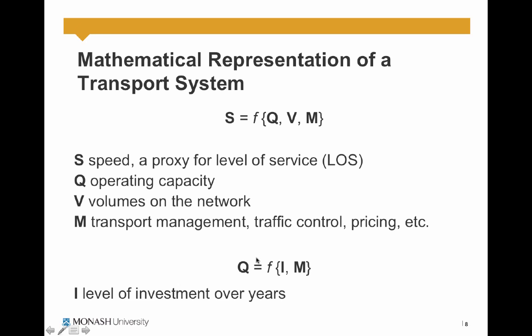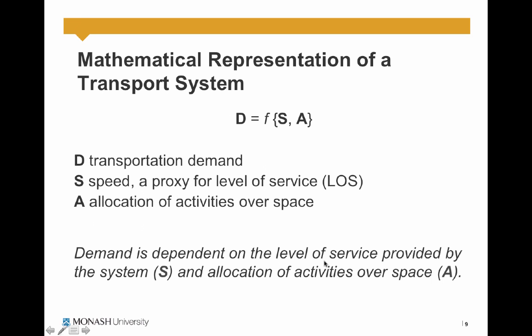Operating capacity itself, Q, is dependent on the level of investment over years and also transport management strategies — so Q is a function of I and M. From the demand side, D represents transport demand, S again represents speed or level of service, and A represents the allocation of activities over space. Remember, transport demand is spatial. So we can represent mathematically that demand is a function of supply and also the allocation of activities over space.